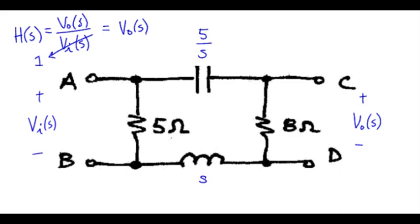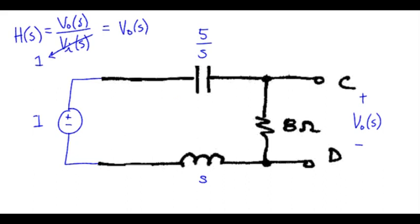Let me go ahead and draw the voltage source with unit value here. Doing that, we notice we've got our 5-ohm resistor in parallel with the voltage source, and that means that element can be removed.